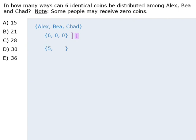Now we'll examine what happens when Alex receives 5 coins. If Alex receives 5 coins, then only 1 coin remains to distribute between B and Chad. B could receive 0 coins or 1 coin. So there are 3 possible outcomes when Alex receives 5 coins.